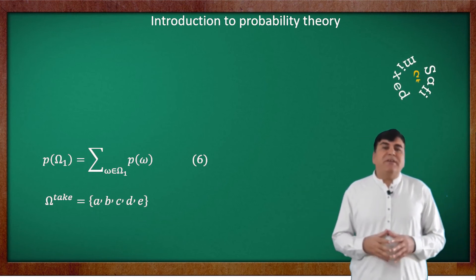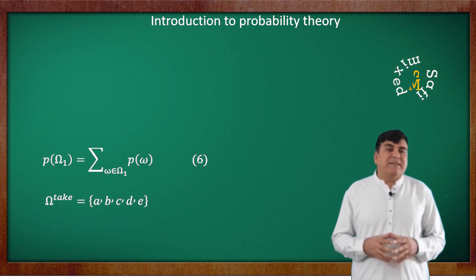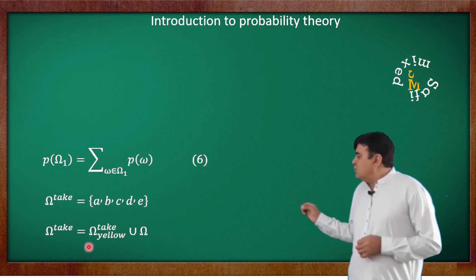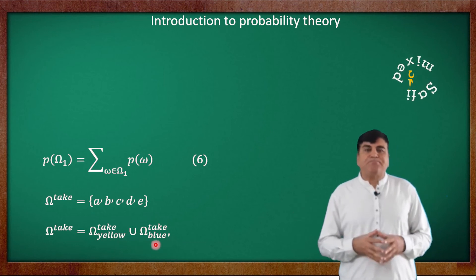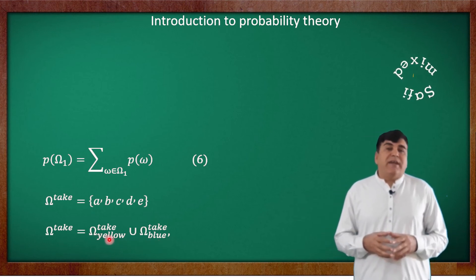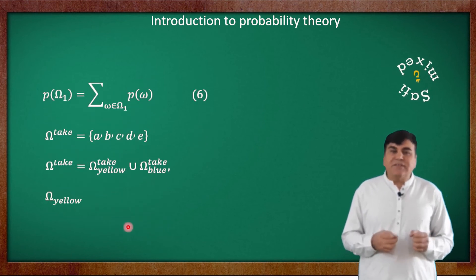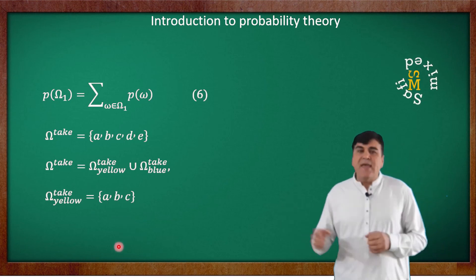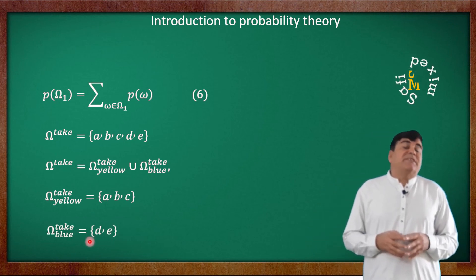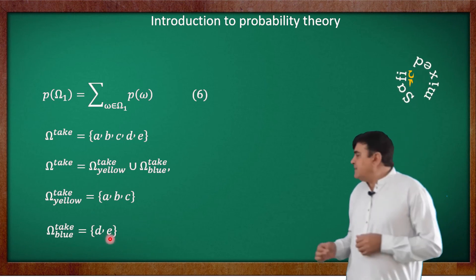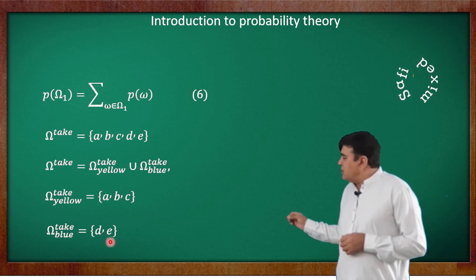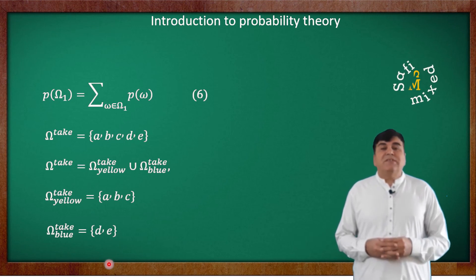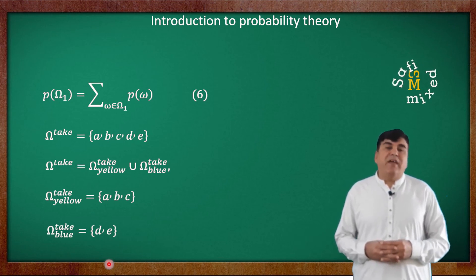This total space can be expressed as a union of two subspaces: Ω_take = Ω_yellow take ∪ Ω_blue take. Where Ω_yellow take is a subspace consisting of three yellow balls and is written as Ω_yellow take = {A, B, C}, and Ω_blue take is a subspace consisting of two balls and is written as Ω_blue take = {D, E}. In this notation, using equation 6, one can easily verify the results of equation 5A and 5B.